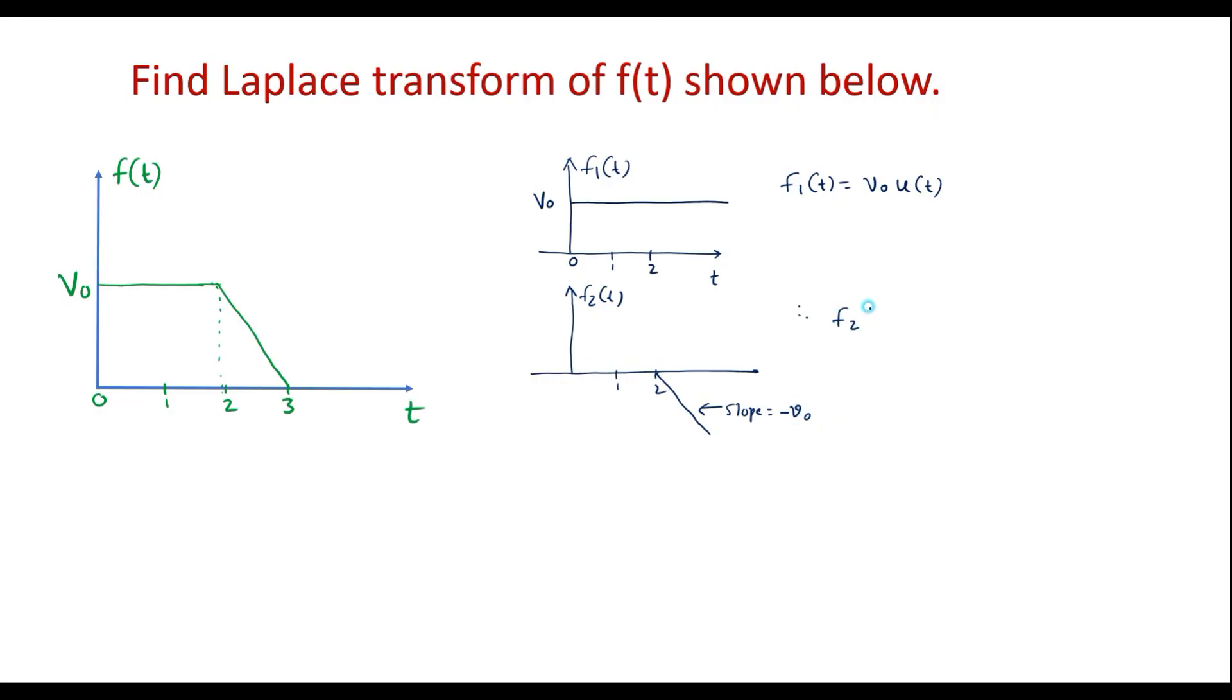So therefore, I can represent f2 of t as minus slope, which is nothing but a shifted ramp signal which begins at t equal to 2. Therefore, it is t minus 2, u of t minus 2.